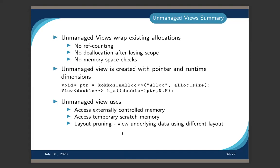In summary: unmanaged views can wrap existing allocations. They do not do reference counting — there's no deallocation when they lose scope. There's no explicit memory space check, so if you get it wrong, that's on you. You create them by providing a pointer and runtime dimensions. They're useful for interoperating with externally controlled memory, for using scratch memory viewed as different types in different places of your code, and for layout punning.